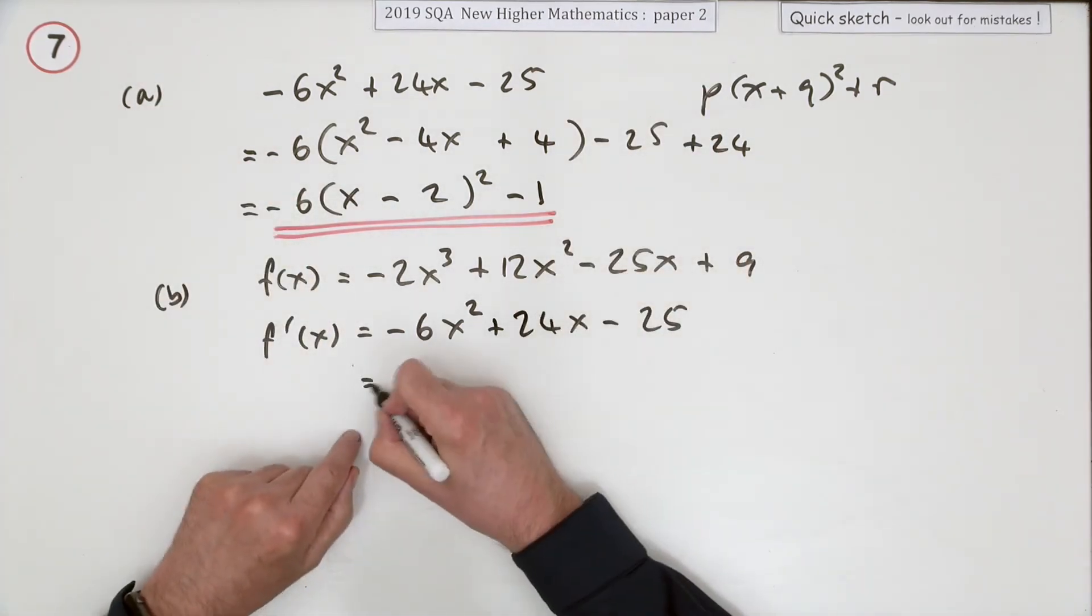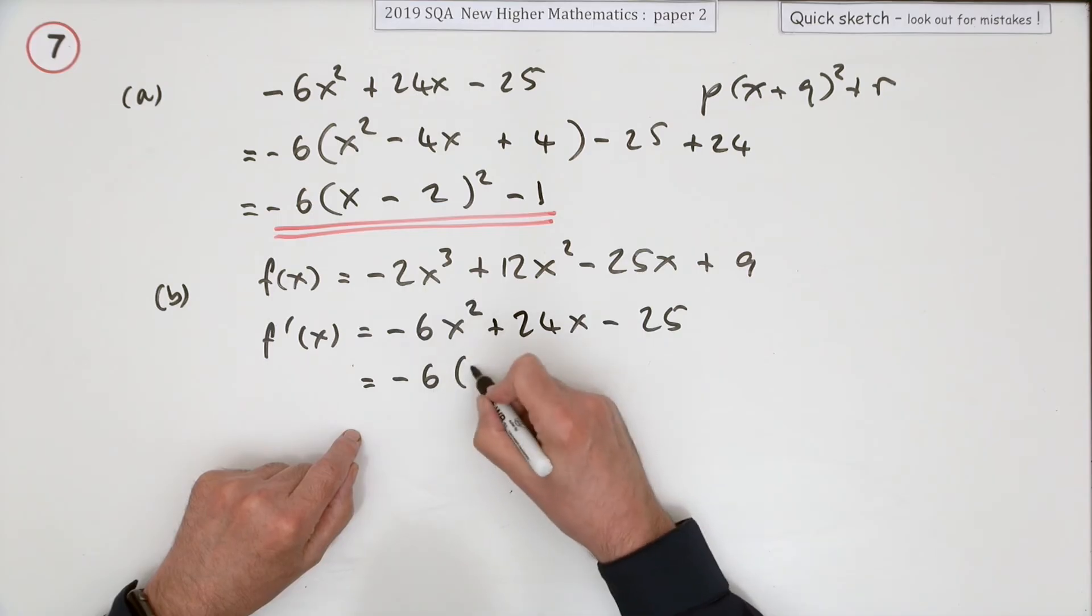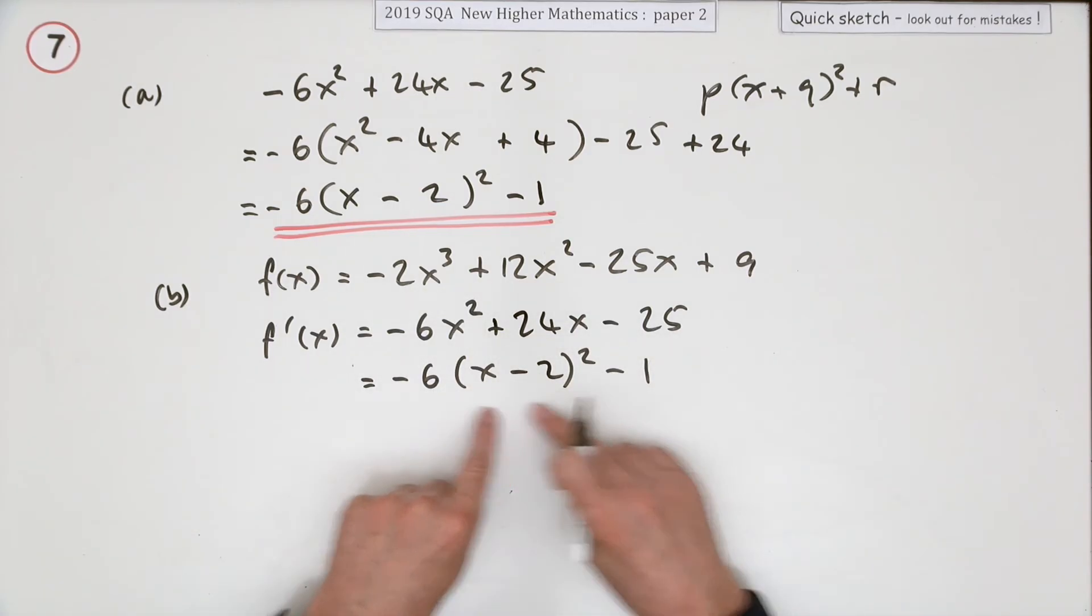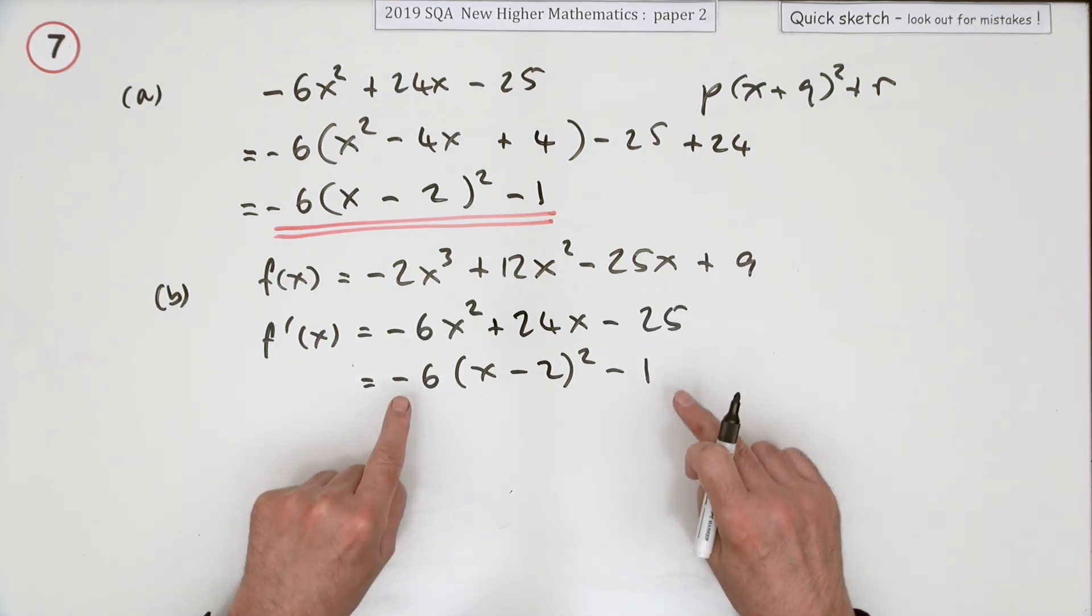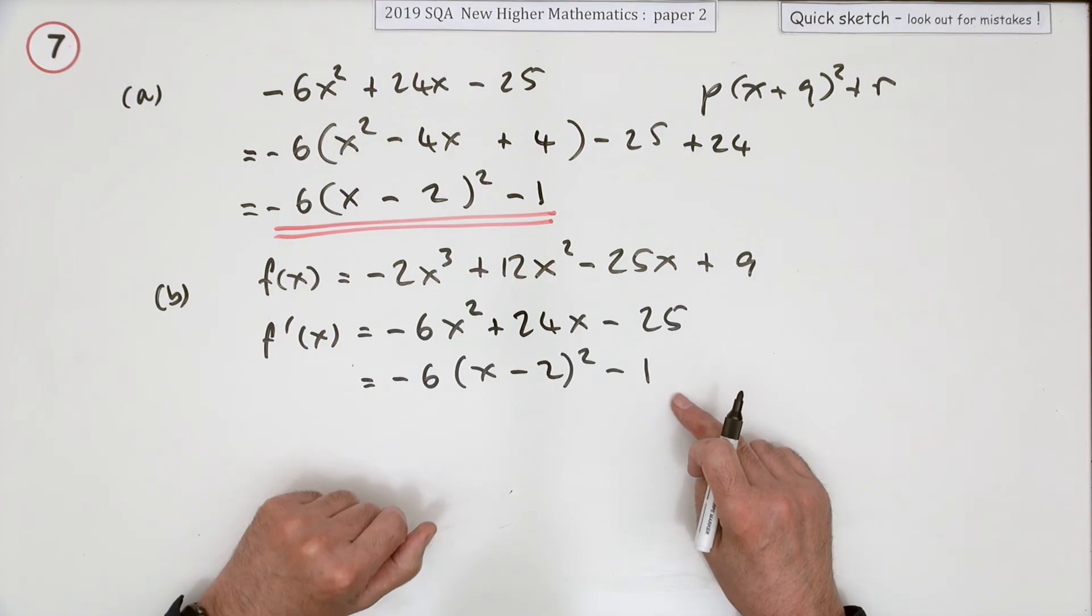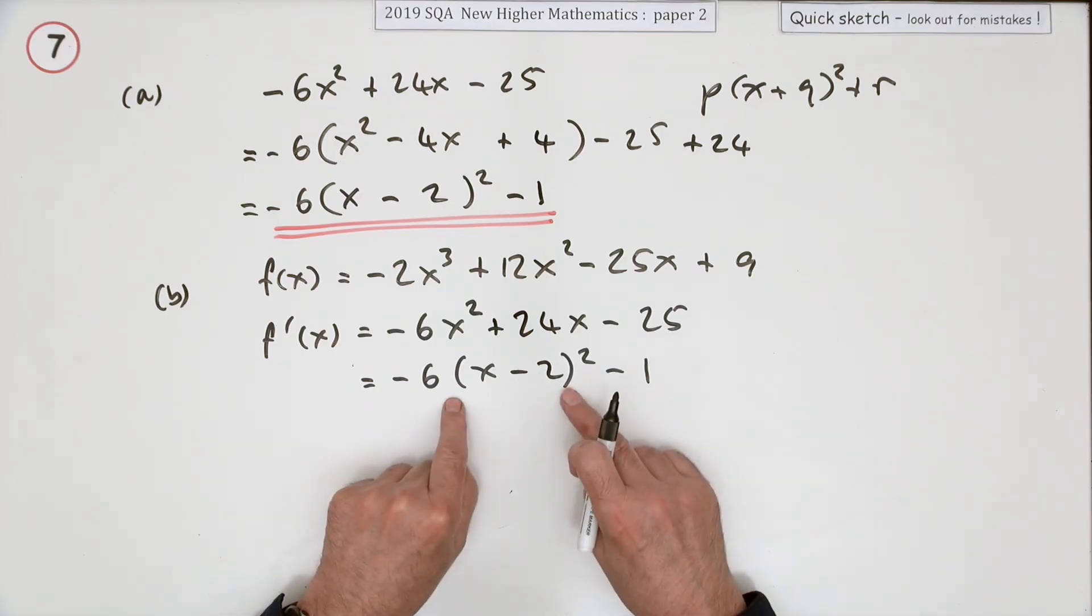It's the same expression as this, well that means you can replace it with that. So you've got negative 6 times (x - 2)^2 - 1. Now examining that, why is that always negative? Why is this always decreasing?